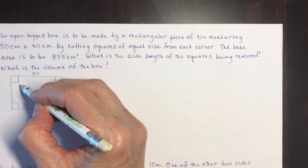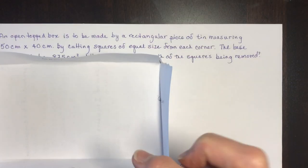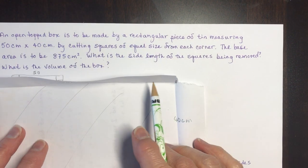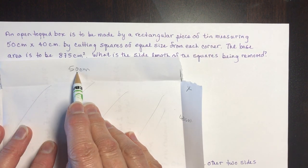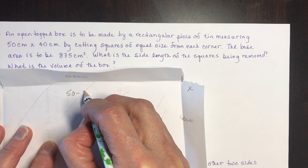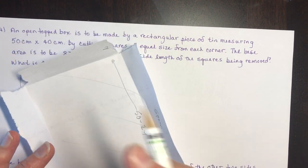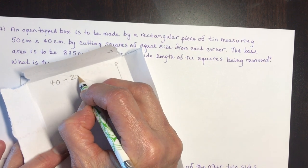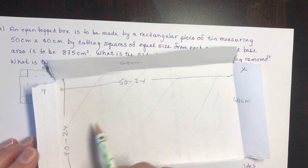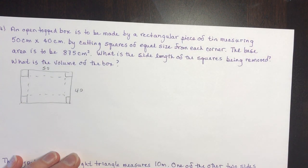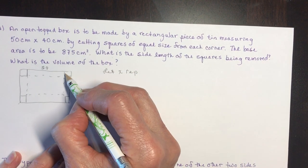The base area is this part. The base length: we took x from each end of the 50 cm side, so it's 50 minus 2x. Similarly, the other side was 40 cm, so it becomes 40 minus 2x. Therefore (50 − 2x)(40 − 2x) equals 875.